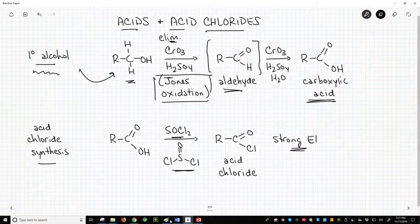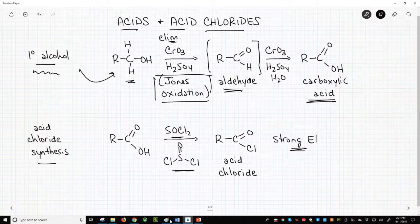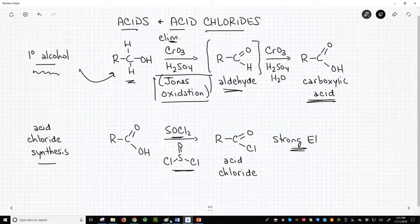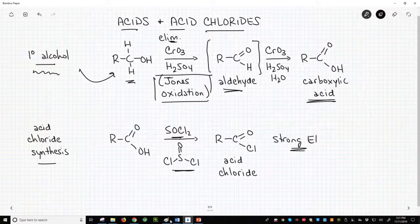These two reactions, making carboxylic acids and then forming acid chlorides, are key steps for accessing different acid derivatives that we'll need to make in the course of doing organic chemistry.